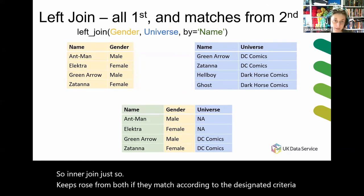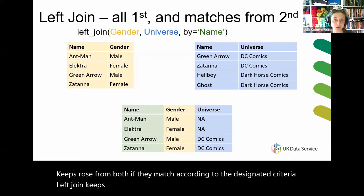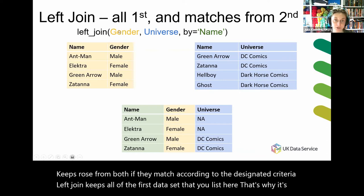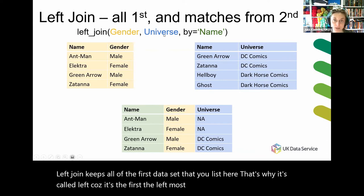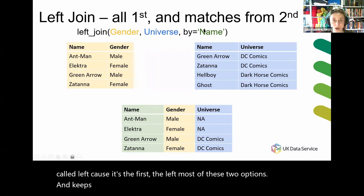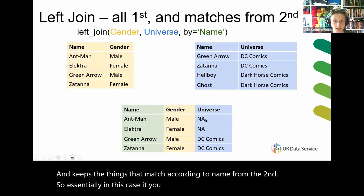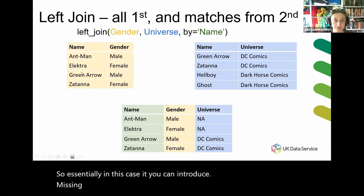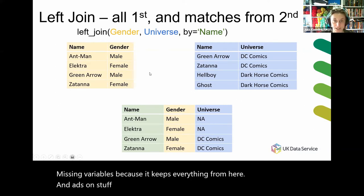A left join keeps all of the first data set that you list. That's why it's called left — because it's the leftmost of these two options — and keeps the things that match according to name from the second. So essentially in this case it can introduce missing variables, because it keeps everything from the first and adds on stuff from the second but only if it matches according to the criteria.